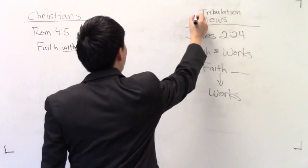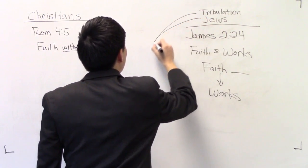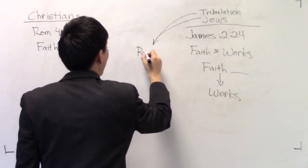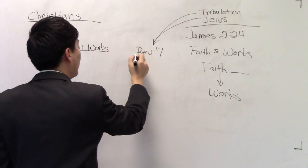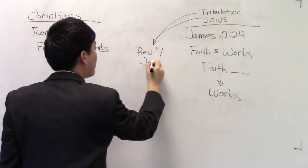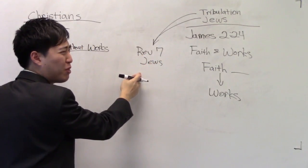You know why this definitely matches up? Because Scripture interprets Scripture. They all build upon each other. See, here's a question: why does Revelation 7 mention the 12 tribes of Israel, the Jews? Why does it mention that in the tribulation?